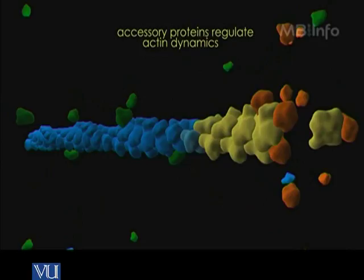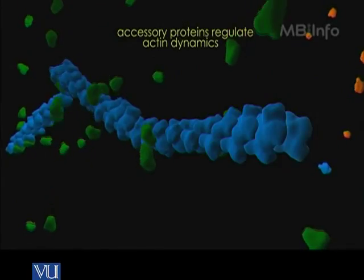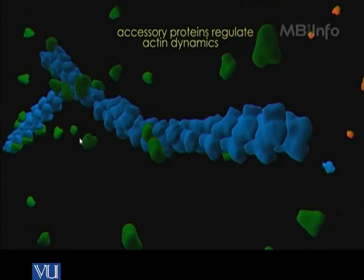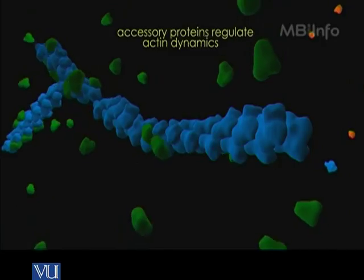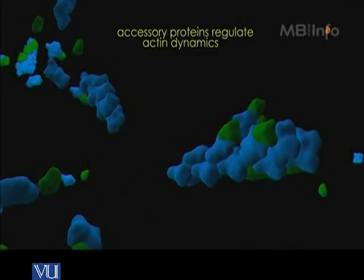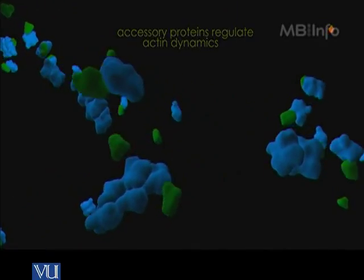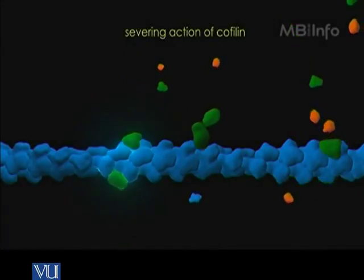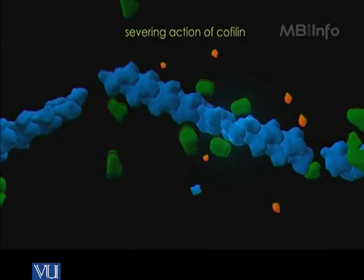Now cofilin, this green globular structure, is going to bind ADP-actin in the filaments. As we said, cofilin can twist the lattice of these filaments, which makes them brittle and they break off easily. That is what you are seeing here — the whole structure is dismantling. The filament is dismantled by the severing action of cofilin.